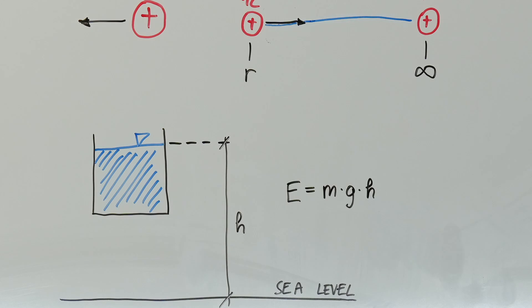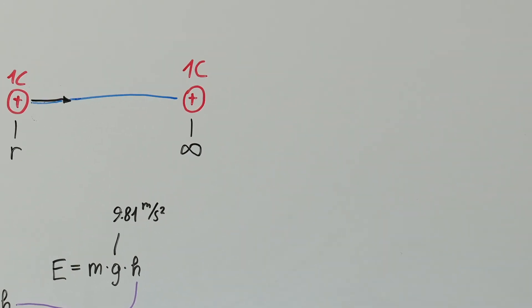You might remember that the potential energy in this context is given by the formula E equals M times G times H, where M is the mass, G is the acceleration due to gravity, and H is the height.